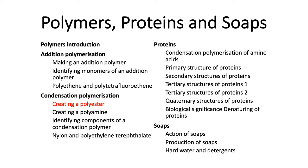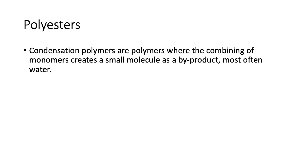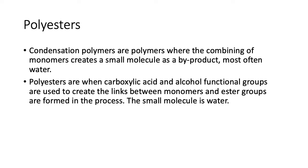Hi, it's Mr. Lim here again. We're going to start learning about polymerization, polyesters, and polyamides. Polyesters are condensation polymers — polymers where the combining of monomers creates a small molecule as a byproduct, most often water. So remember: condensation polymerization requires water as a product as well.